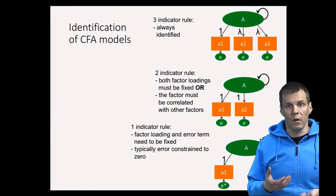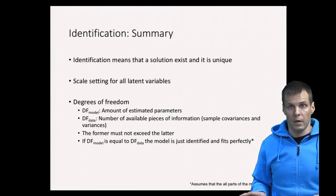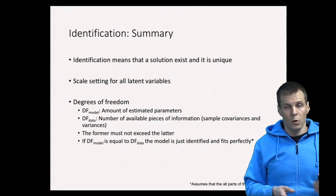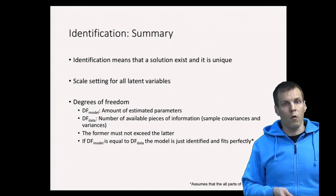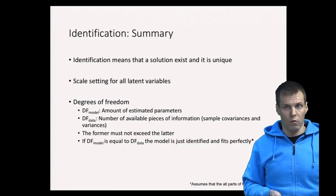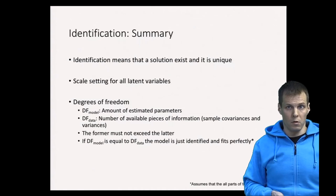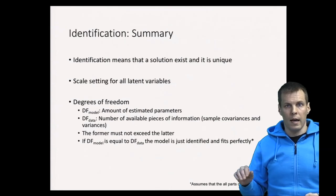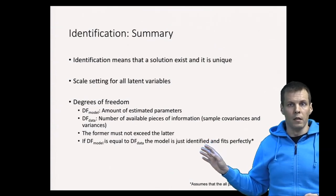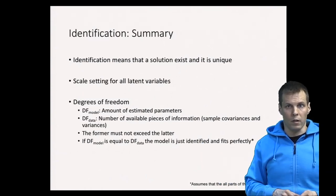Identification is a requirement for estimation: if a model is not identified, it cannot be meaningfully estimated. Identification means having enough information — you need at least one unit of information for everything you estimate. We need a scale for each latent variable and the degrees of freedom must be non-negative. Ideally, degrees of freedom should be positive, and the more positive it is, the better our model tests are, because redundancy in information improves the quality of estimation.